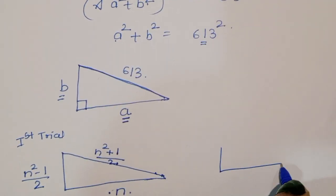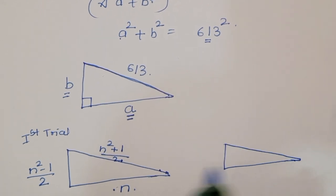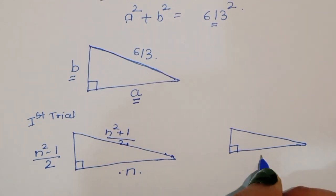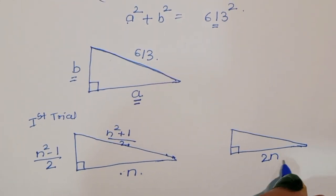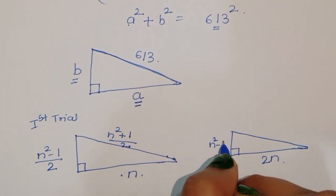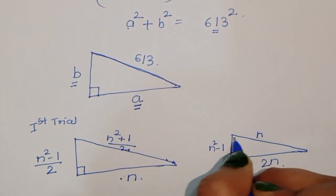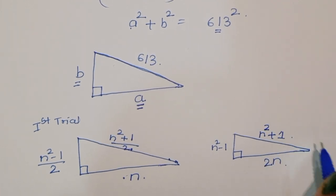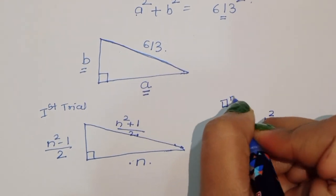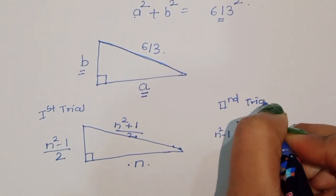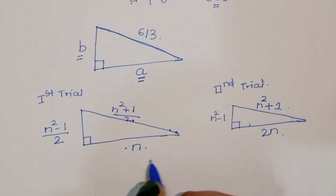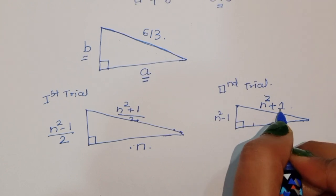Now the next trial: if we multiply by 2, and one side is 2n, then the next side becomes n squared minus 1, and the hypotenuse becomes n squared plus 1. This is the second trial. Comparing with the second trial, the hypotenuse is n squared plus 1.